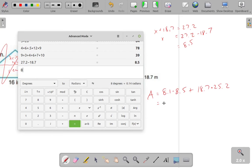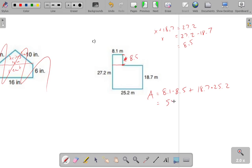Let's go ahead and do that. 8.1 times 8.5, plus 18.7, times 25.2. We get 540.09. These were all in meters, so this will be in square meters.